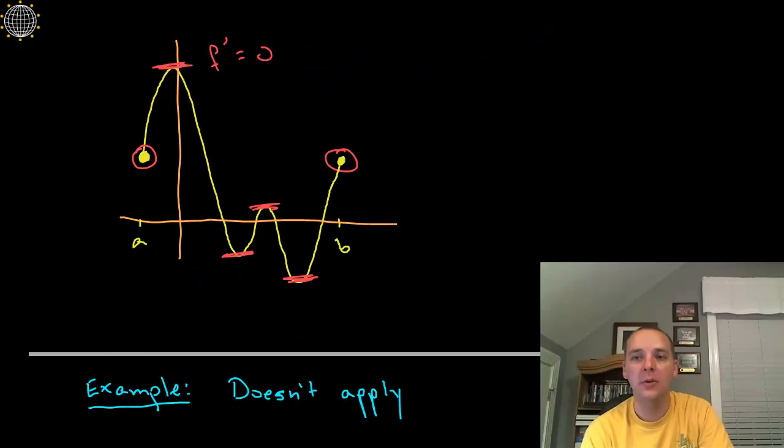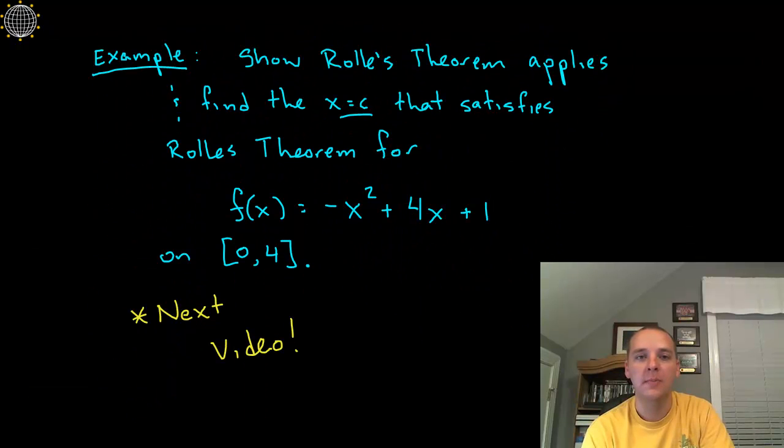I will tell you what I will do though: I am going to do an example and you can click the next video to watch this example. But if you want to practice it before you watch it, here is what the example is going to be: Show Rolle's Theorem applies and find the c value that satisfies Rolle's Theorem for this function, g(x) = -x² + 4x + 1 on [0,4]. So if you want to go ahead and try this, you are welcome to do so and I will give the solution for that in the very next video.